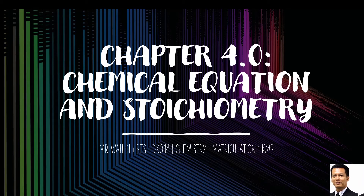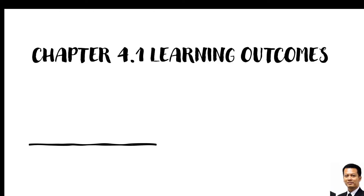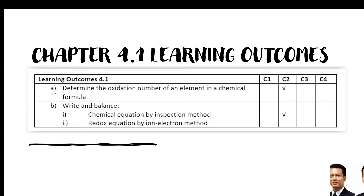Hello and Assalamualaikum. We are going to proceed to chapter 4, which is about chemical equations and stoichiometry. Chapter 4.1 learning outcome — we are going to learn about this first: determine the oxidation number of an element in a chemical formula.